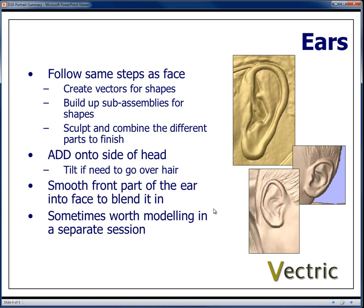Sometimes it may be worth modelling the ear in a separate session of Aspire if it's a complicated enough model, because it is going to create a number of vectors. In order to keep things simplified, sometimes it's easiest just to take those vectors, go into a separate session, model the ear and then just copy and paste the ear component back into your original job.